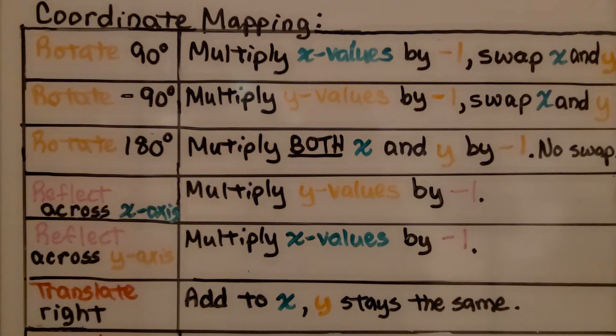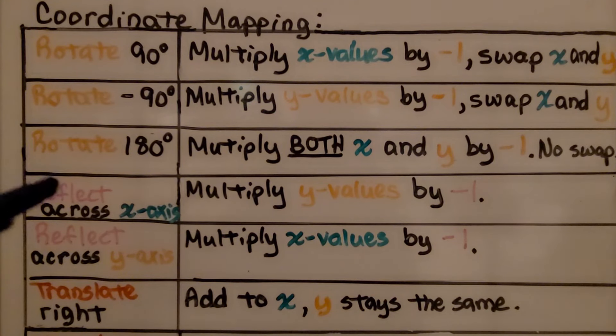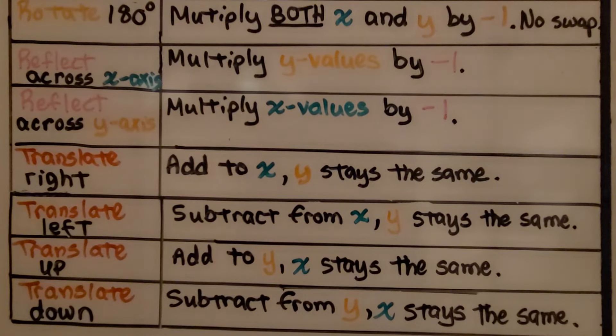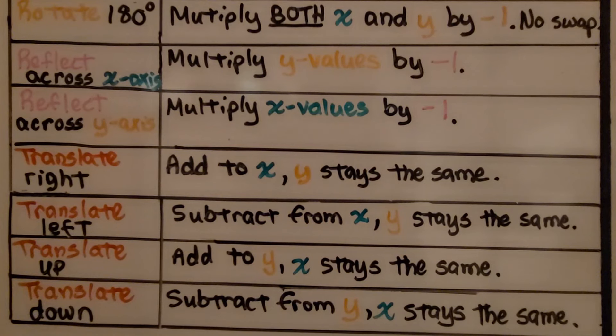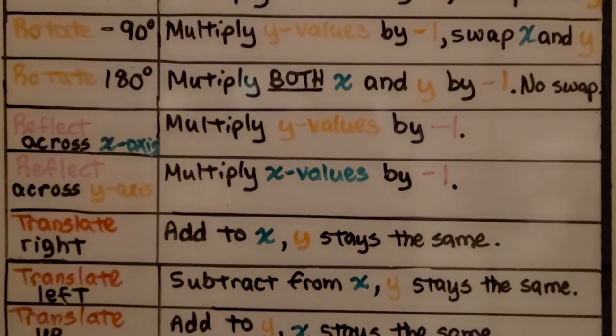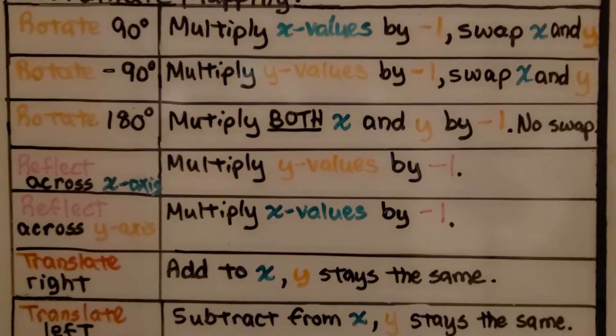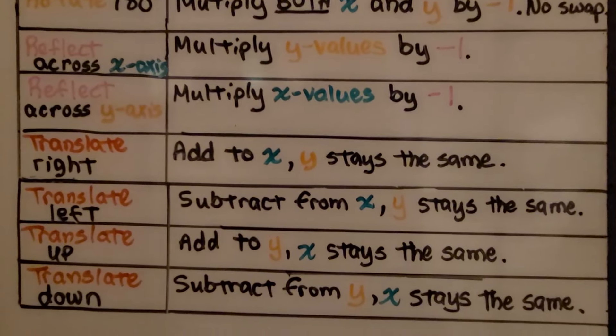In Lesson 9.4 we learned to algebraically represent transformations. We learned how to do rotations of 90 degrees, negative 90 degrees which is counterclockwise, 180 degrees. We learned how to reflect algebraically and how to translate - the rules for translating right, left, up and down. If you don't have these in your notes, you should rewind a little bit. Take a screenshot of this upper part showing the rotations, and you can screenshot the bottom part that includes the translations.